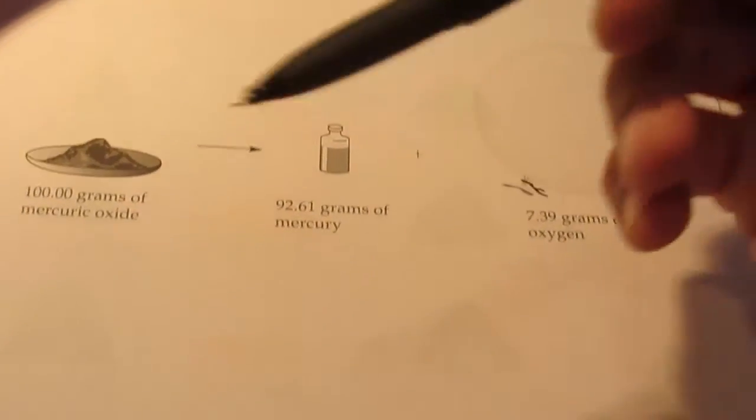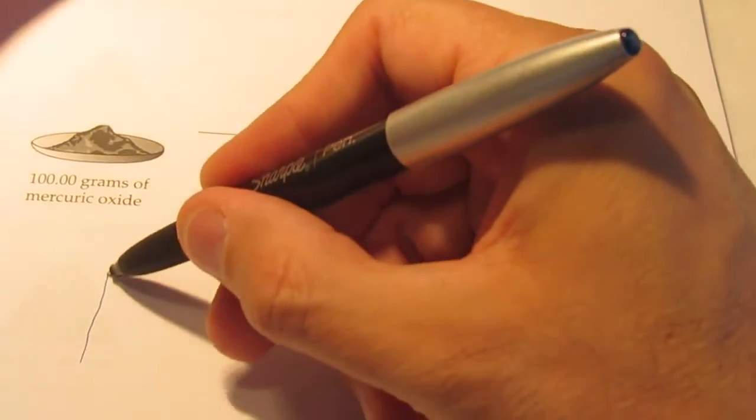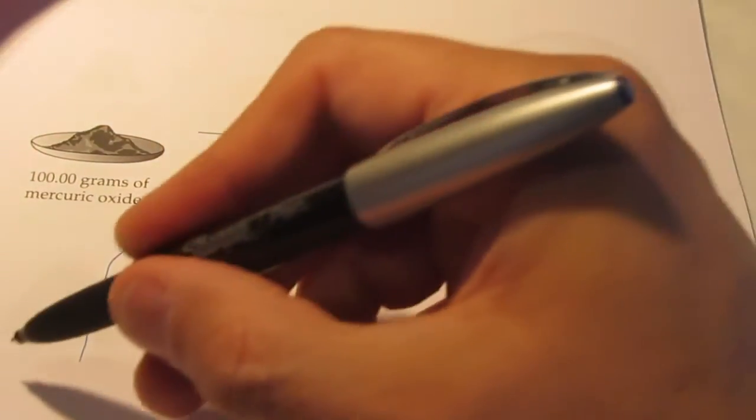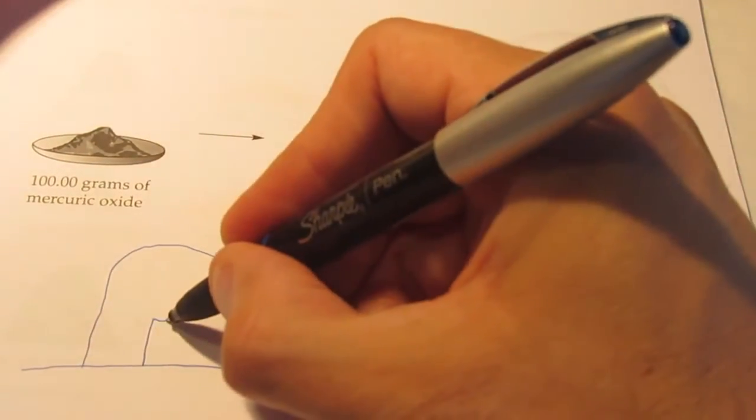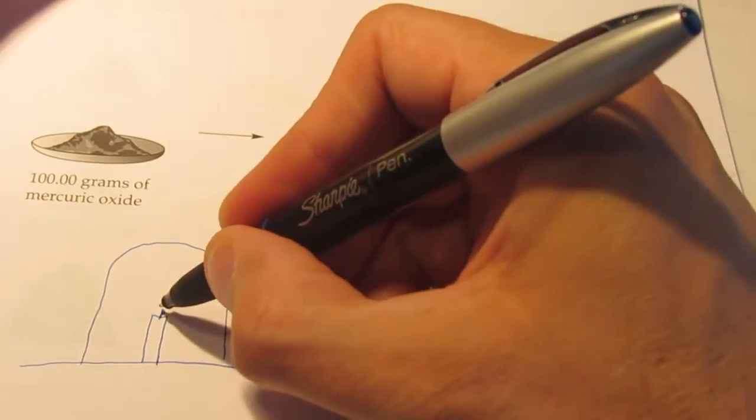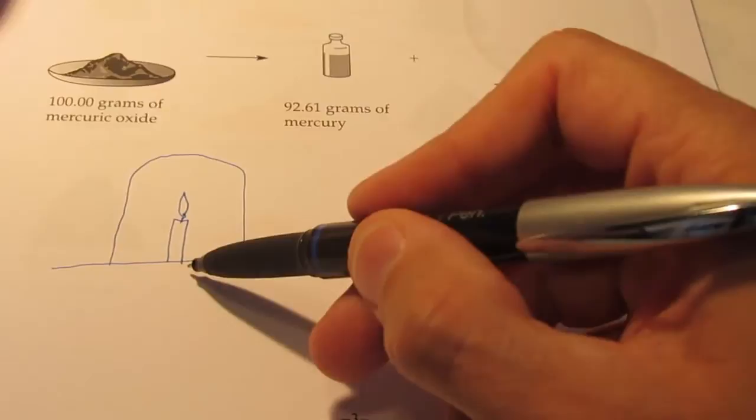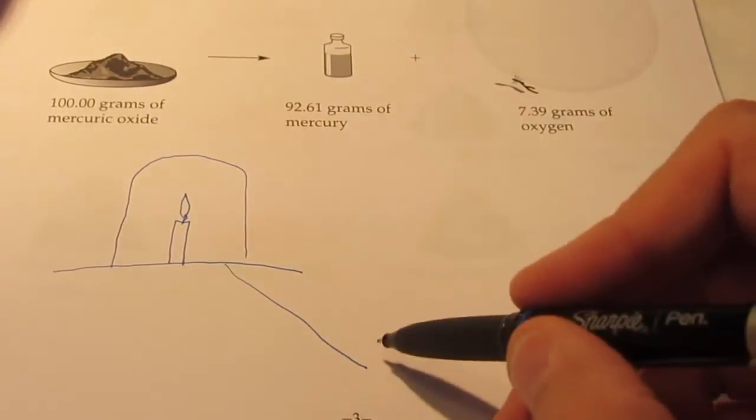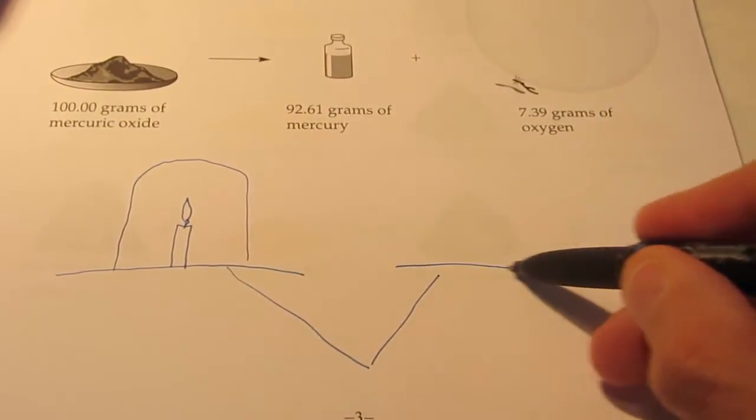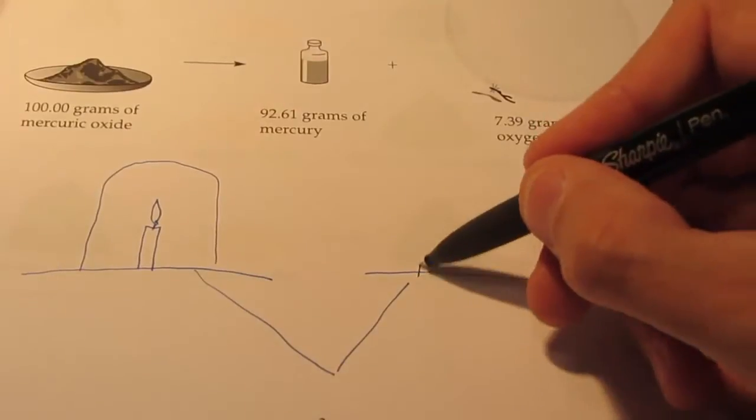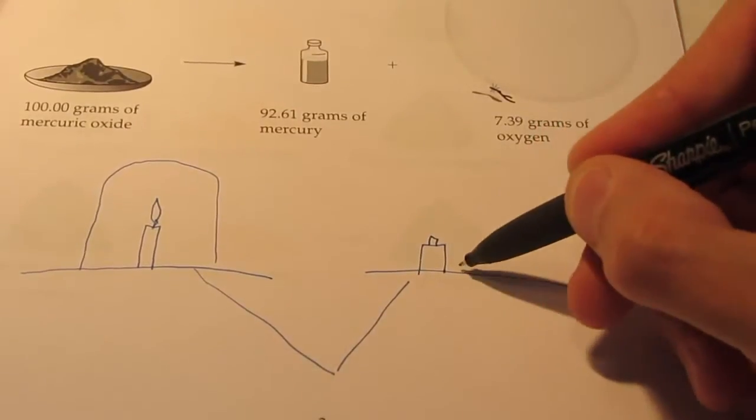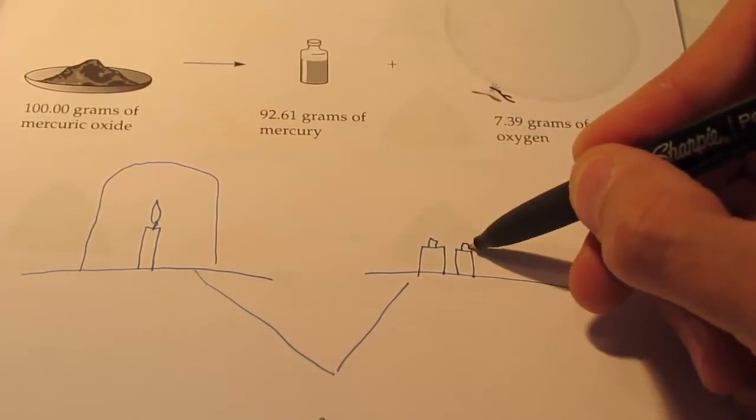We can even consider a candle burning. Let's say we had a dome, and we placed a candle inside that dome, and we lit that candle on fire. Now let's go ahead and put this on some type of balance. This is a really crude drawing of a balance here. And we'll put a certain mass on this side of my balance. This is getting really bad, isn't it folks?